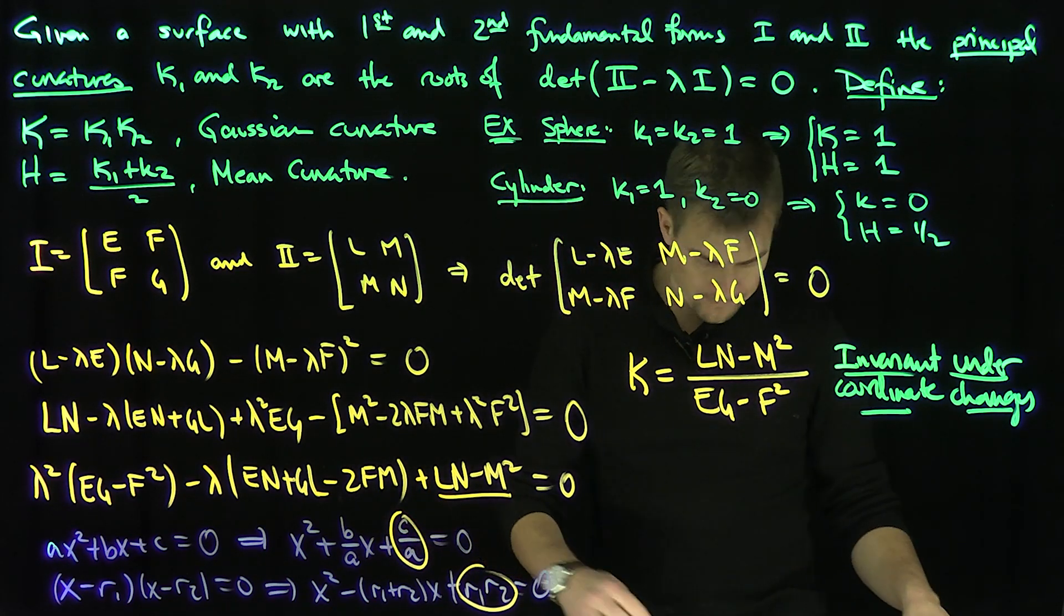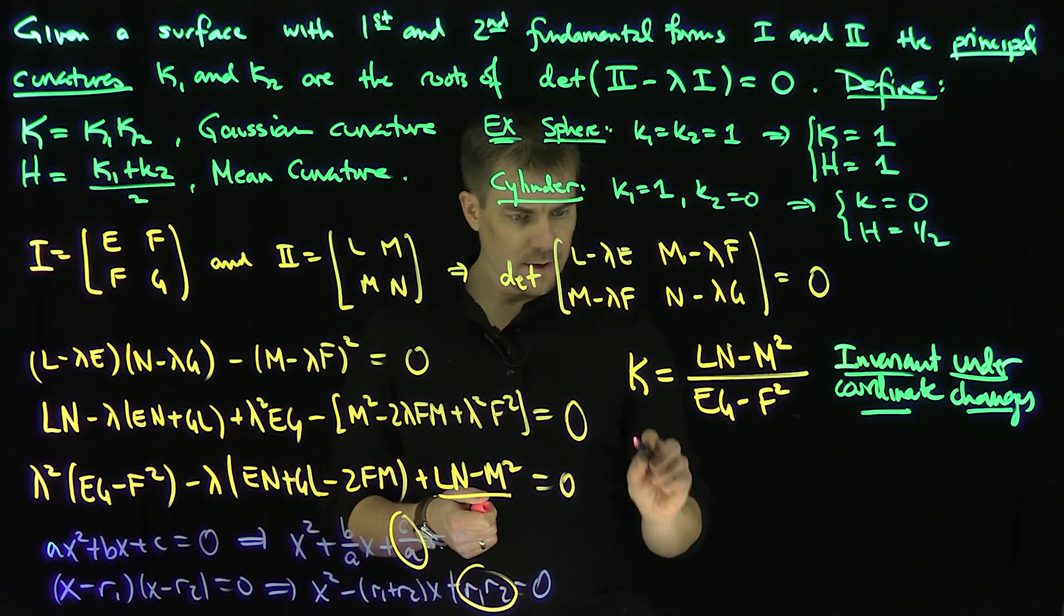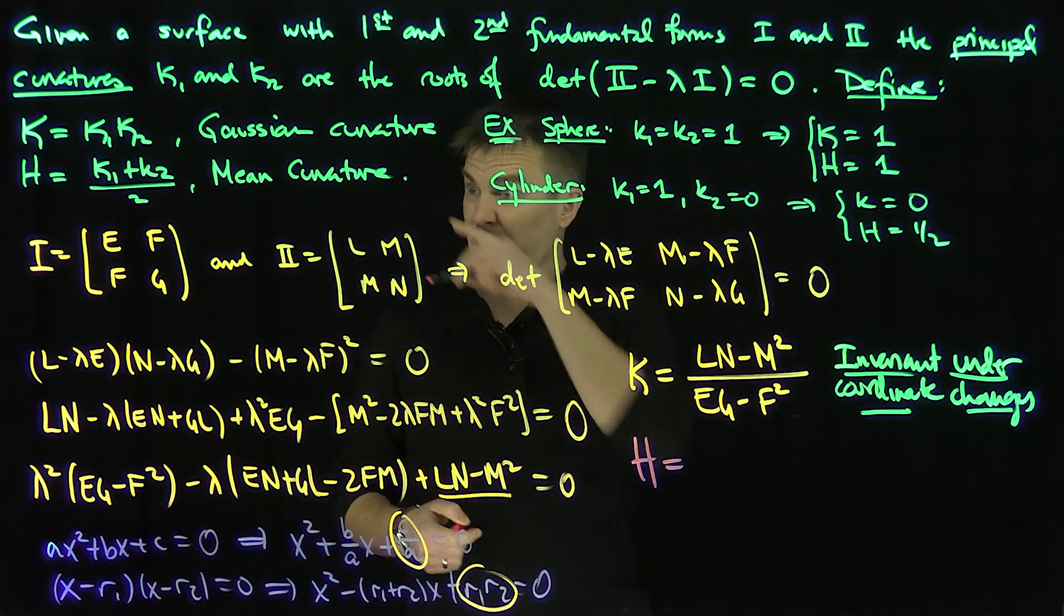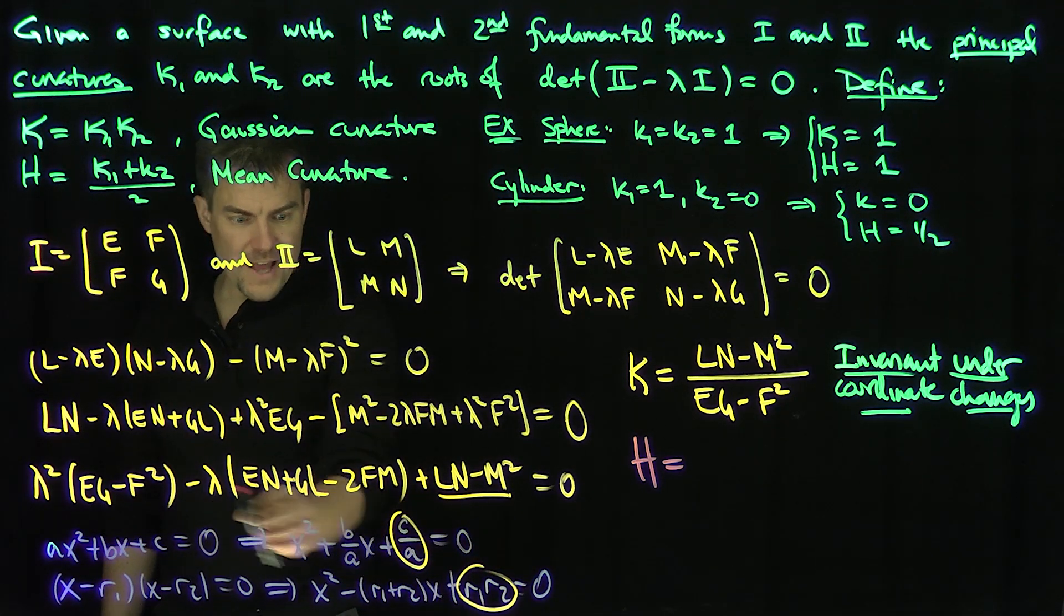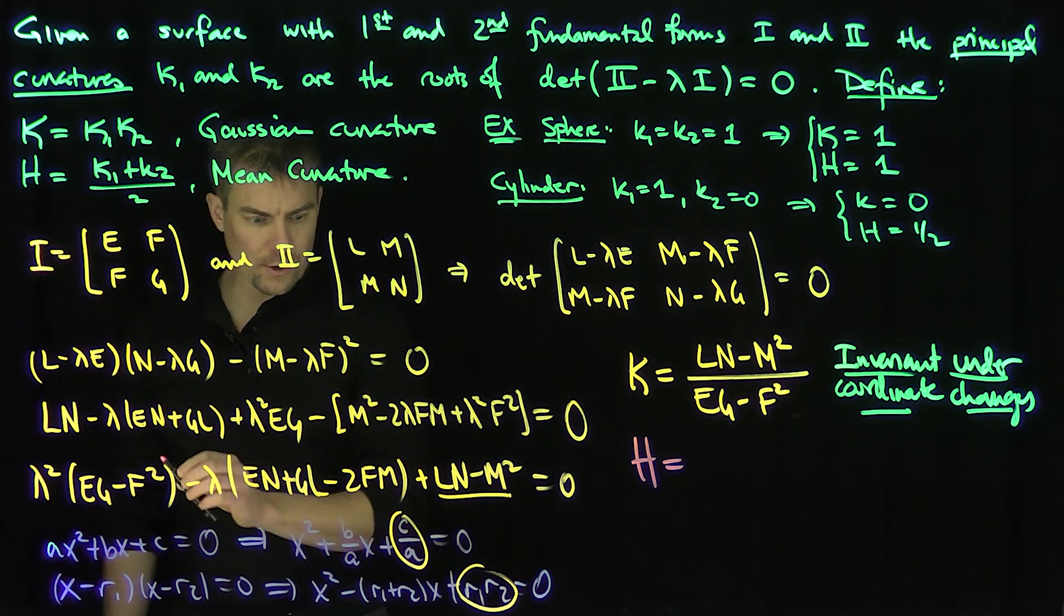Now what's H going to be? H, the mean curvature, is going to be the, it's R1 plus R2. If there's a negative sign, it's this expression over here over A.